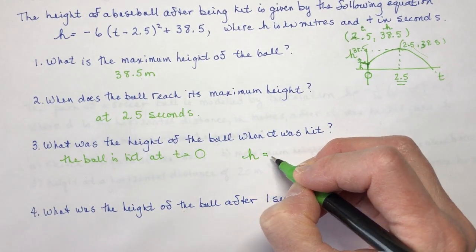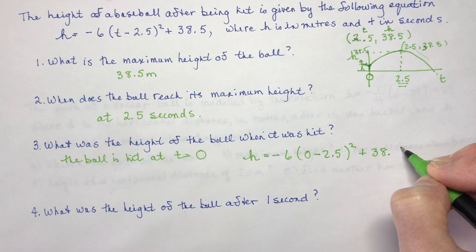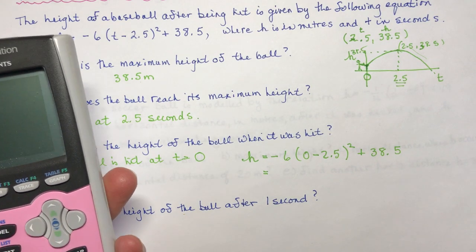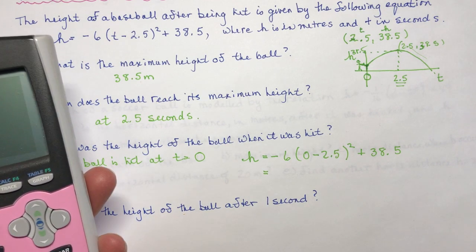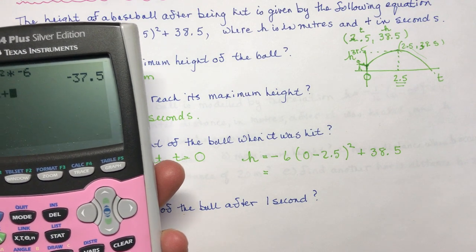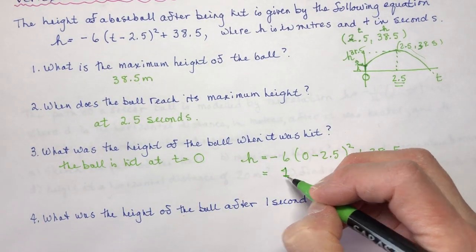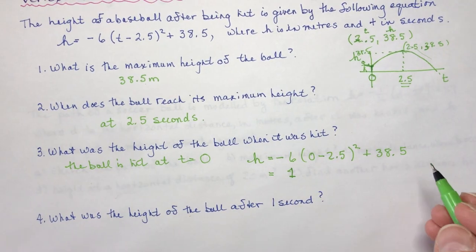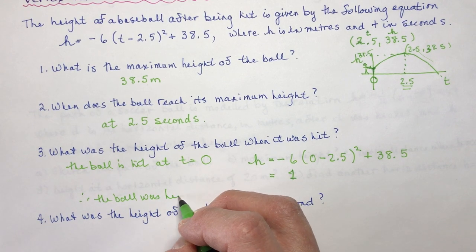The ball is hit at time zero, so I want to know the height when t equals zero. I just plug in zero for time, square it, and add 38.5. On the calculator: 2.5 squared — it doesn't matter that it's negative because I'm squaring it — times negative six, plus 38.5, and I get one. So the ball was hit from one meter. That makes sense — always check if your solution is reasonable. The ball was hit from a height of one meter.